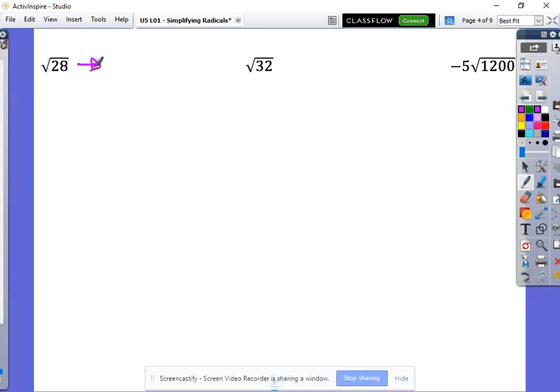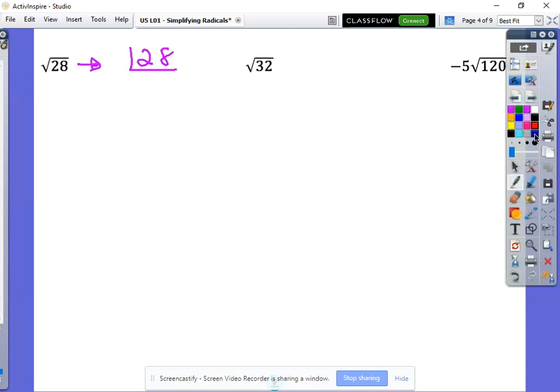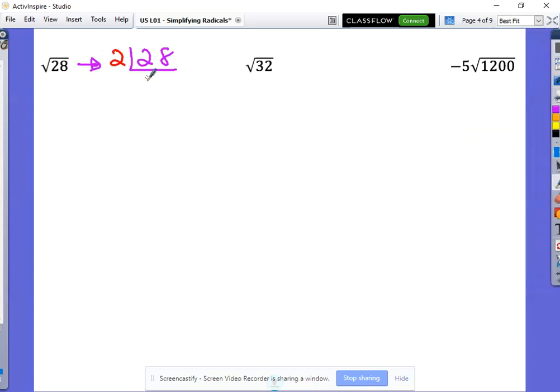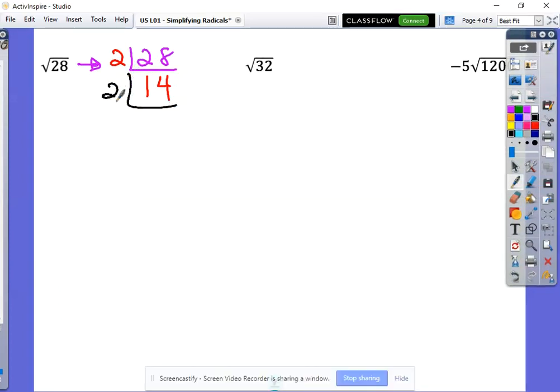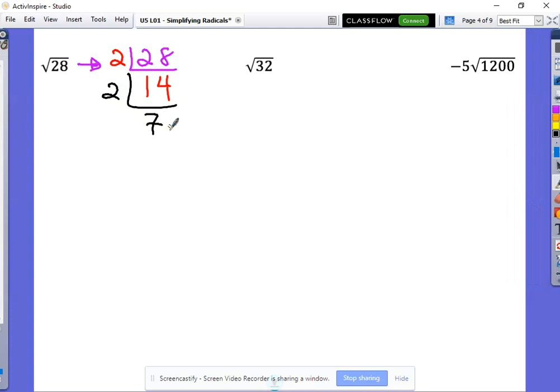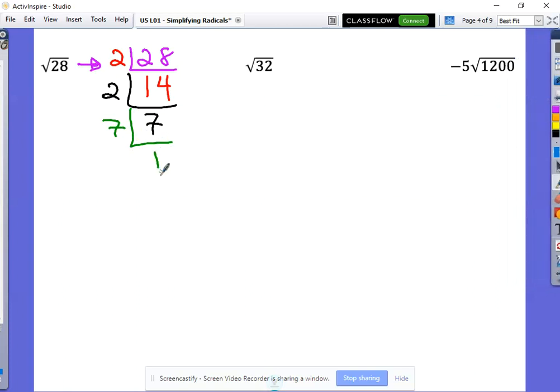So to get us started here, remember, we're going to put 28 in our first little box there and then divide out the smallest number we possibly can. Again, that happens to be two. That leaves us with 14. Once you've divided out two, then divide out again. The smallest number again is two. Then we're left with seven. But the smallest number we can divide out of seven is actually itself, seven.